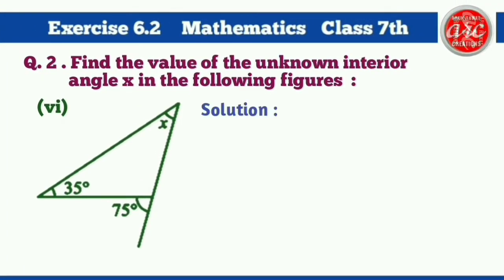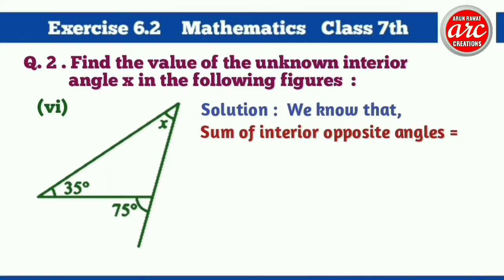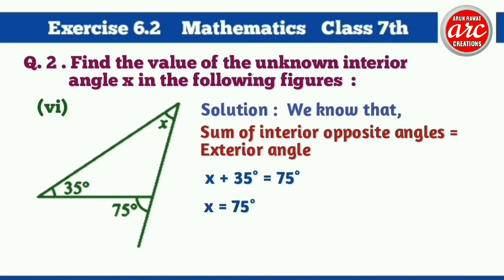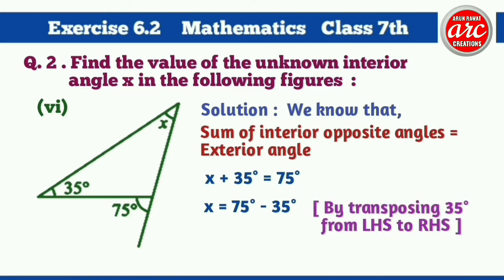Part 6 solution: We know that the sum of interior opposite angles is equal to the exterior angle. So X plus 35 degrees is equal to 75 degrees, or X is equal to 75 degrees minus 35 degrees by transposing 35 degrees from the left-hand side to the right-hand side. X is equal to 40 degrees. So our answer, angle X, is equal to 40 degrees.